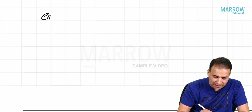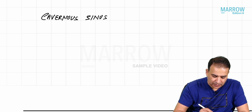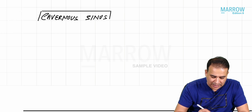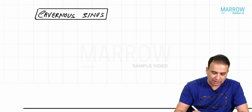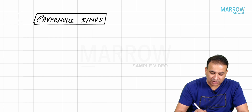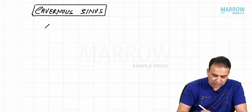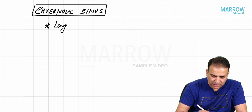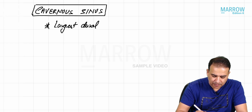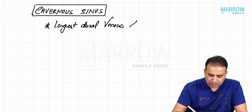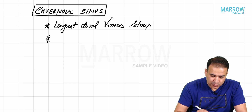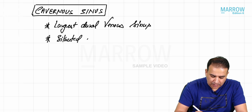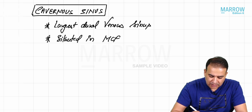Let us talk about the cavernous sinus in detail. We'll discuss the incoming channels, outgoing channels, and then the relations of the cavernous sinus. First, a few key points: the cavernous sinus is the largest dural venous sinus, and it is situated in the middle cranial fossa.